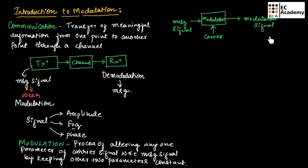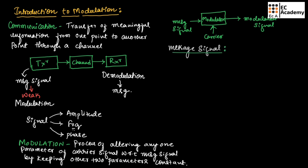This is the general block diagram of the process of modulation. A message signal is taken as input by a modulator; along with that, it will take the carrier signal. The modulator will alter any one parameter of the carrier signal with respect to the instantaneous value of the message signal and produce a signal known as the modulated signal, which will then be transmitted over a channel.